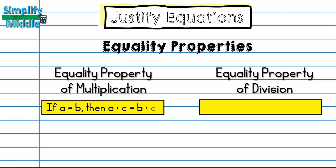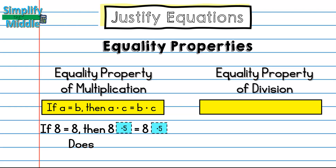Our last two equality properties are for multiplication and division. It's important to note that we never use 0 as the number we multiply or divide by. For multiplication: if a = b, then a × c = b × c. So if a = 8 and we multiply both sides by 5, we find 40 = 40 — the equation stays balanced.